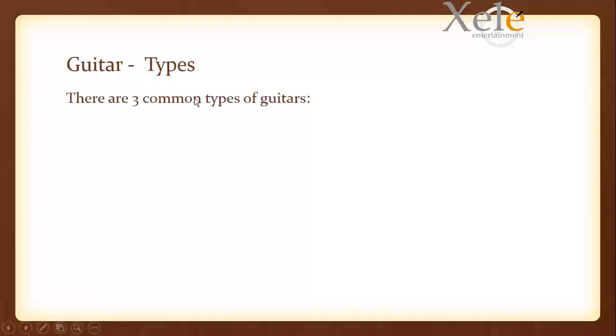So let's look at the types of guitars that we have. There are three common types of guitars. The first of them is the classical acoustic guitar. This classical acoustic guitar usually has nylon strings. In some cases, it is called the Spanish guitar.